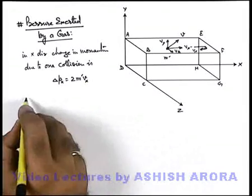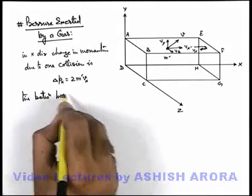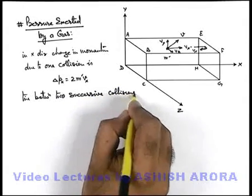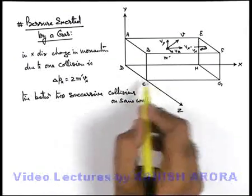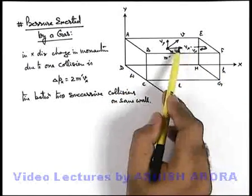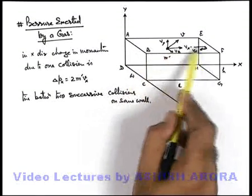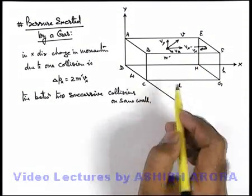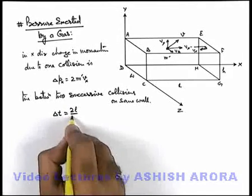Now if we find out the time between two successive collisions on the same wall — say if the length of this container is l, its width is w, and its height is h — then in the x direction the molecule will travel a distance l, strike the wall, and come back by travelling a distance l. So between two successive collisions it will cover a distance of 2l. Therefore the time between two successive collisions, delta t, can be written as 2l divided by v_x.